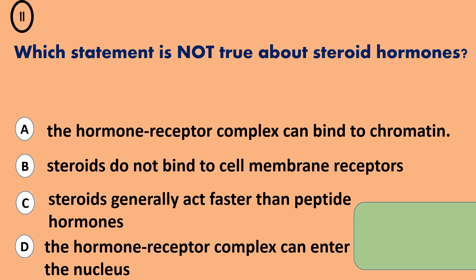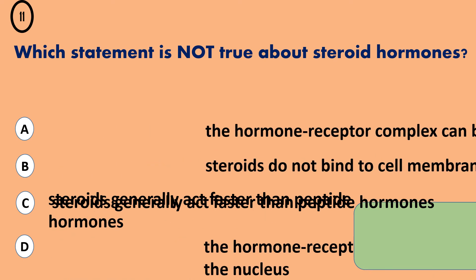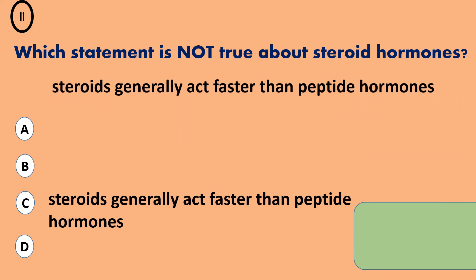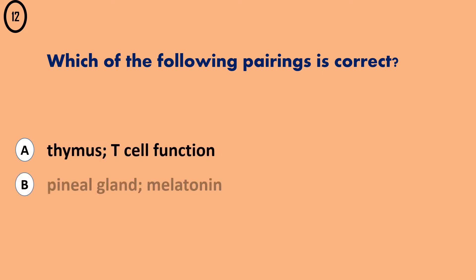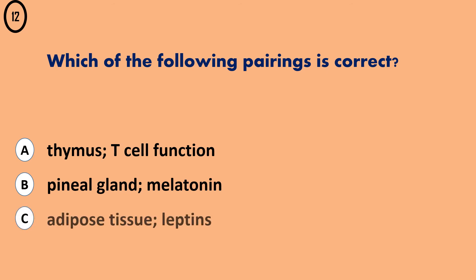Question 11. The correct answer is... Question 12. A - Thymus, T-cell function. B - Pineal gland, melatonin. C - Adipose tissue, leptins. D - All of the choices are correct.